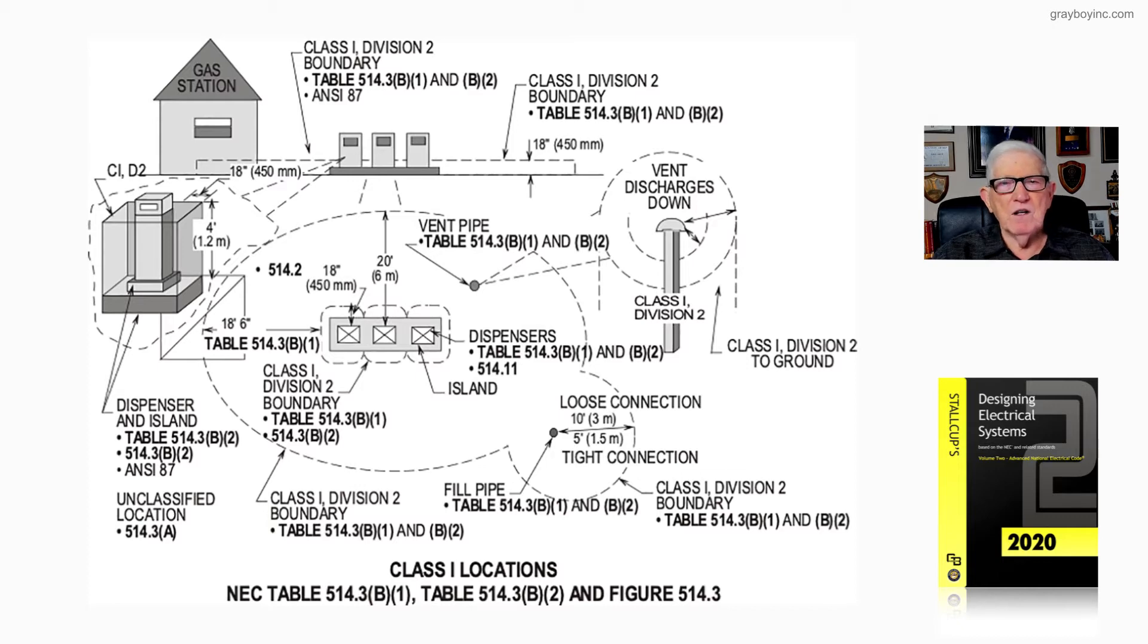Notice sometimes you have those dispenser pumps closer to a filling station, a little store inside, a fast grocery type. Then sometimes you'll come around the building, and then the door will be to the left of that 18 inch boundary so that you don't have to classify inside. And there's a solid wall on the wall facing the dispensers.